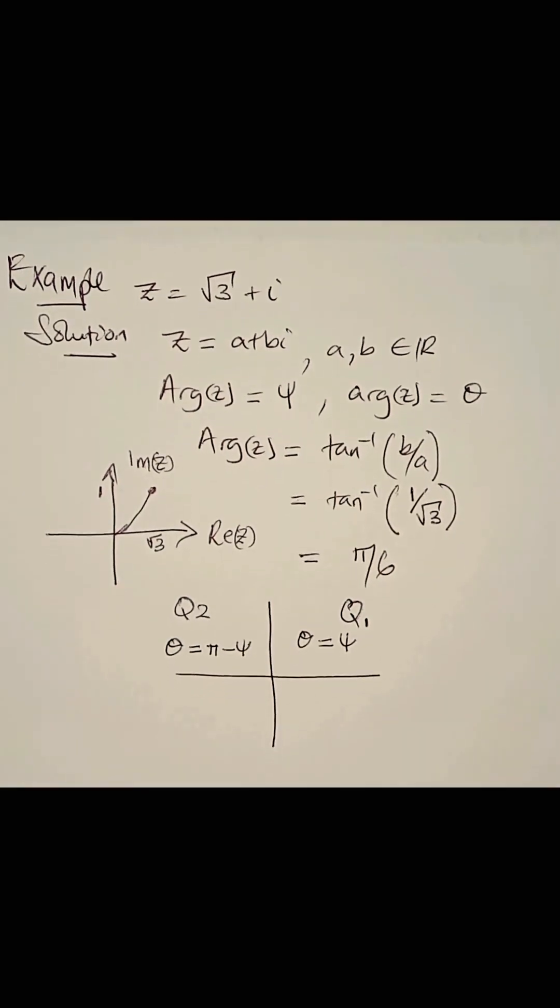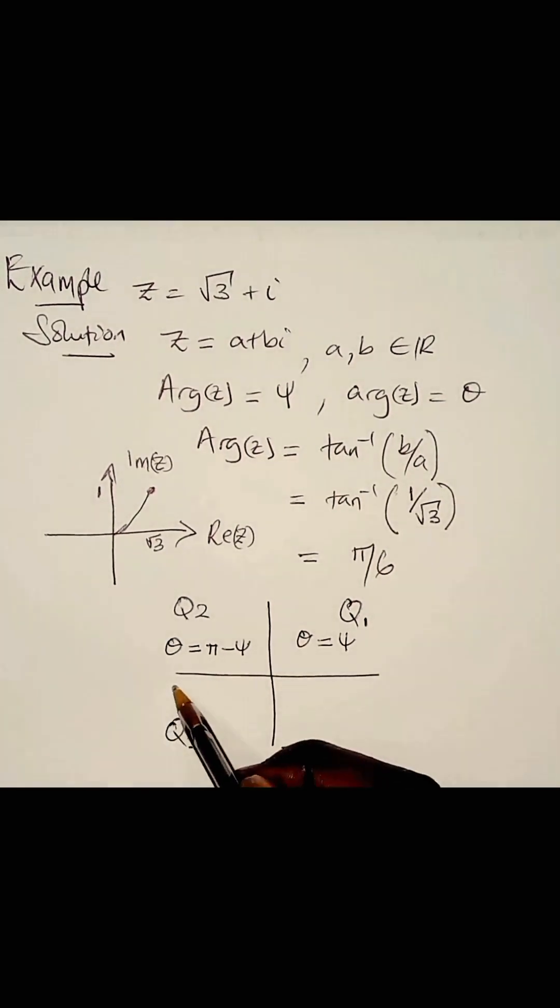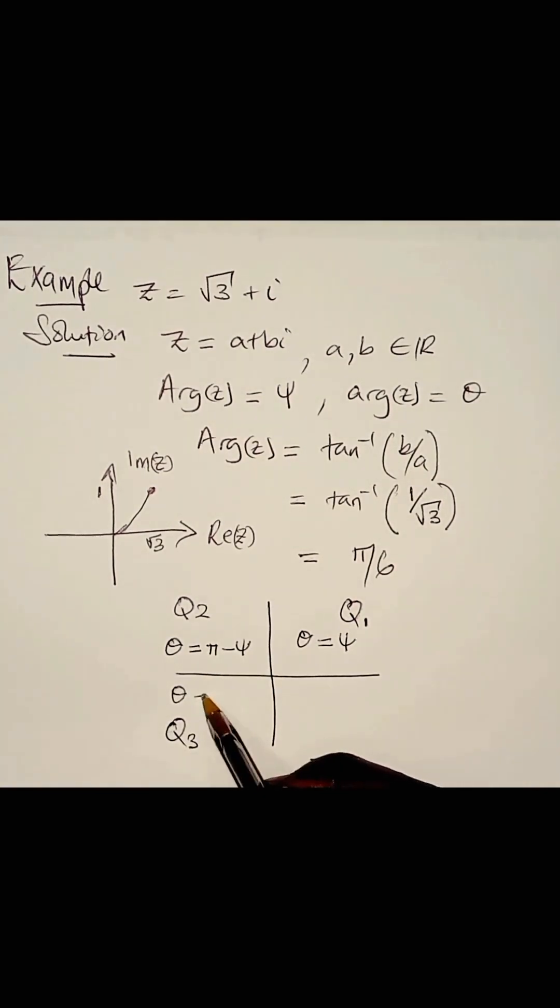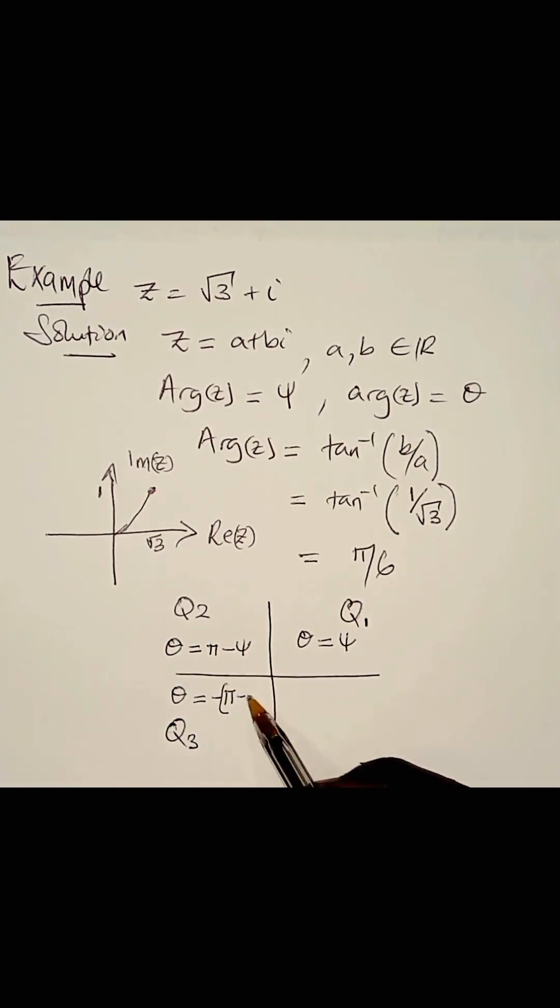And in the third quadrant, Q3, the principal argument is equal to minus pi minus phi. And in the fourth quadrant, the principal argument is equal to minus phi.